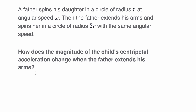The key realization here — and we derived this in a previous video — is that the magnitude of centripetal acceleration is equal to r times our angular speed squared. So initially, the magnitude of our centripetal acceleration, using the same notation, with angular speed omega and radius r, is just going to be r omega squared.